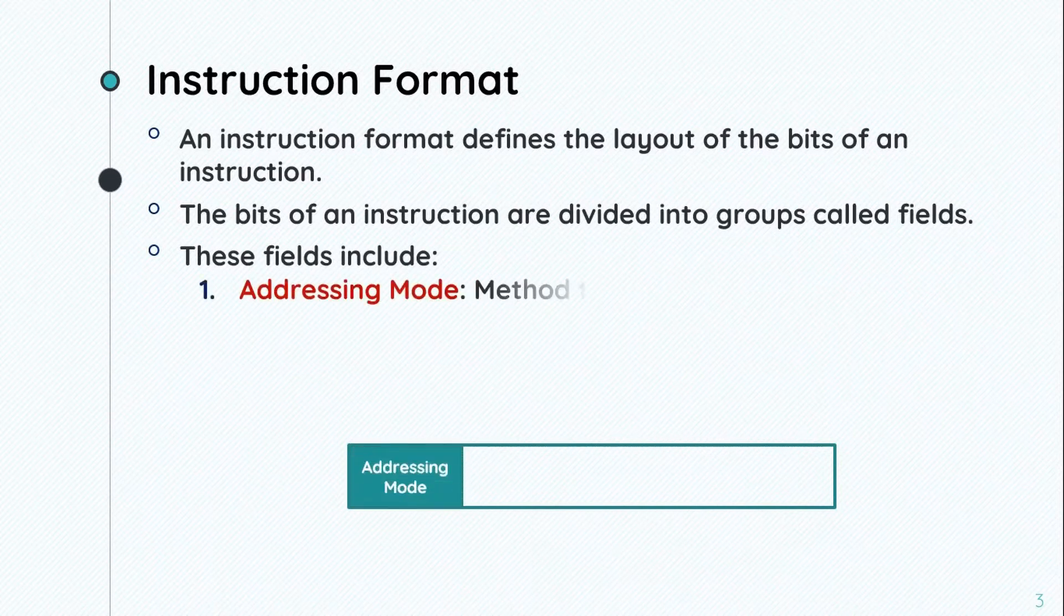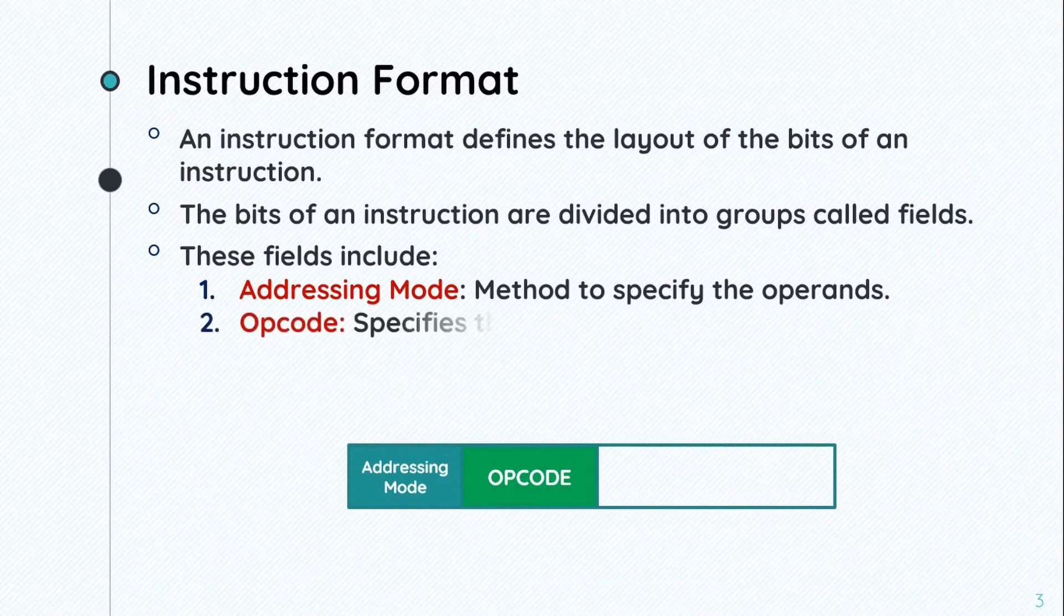Addressing mode is a method to specify the operands. Then the operation code actually specifies which operation has to be performed.